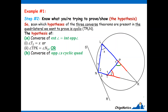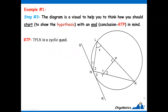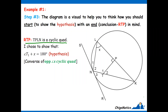From there, we look at the converse of opposite angles of a cyclic quadrilateral — this is about adding pairs of opposite angles. The angle pairs we look at are T1 and N2, and P. Those are the angles we are supposed to pair and add — those will be the hypotheses. Now, step number three: the diagram is a visual to help you think about how to start. Start to show the hypothesis with an end in mind. We eventually want to conclude that TPLN is a cyclic quad, but we must choose one hypothesis present in the diagram. I have chosen to show that angle T1 plus angle X equals 180 — that is the hypothesis I am going to prove.